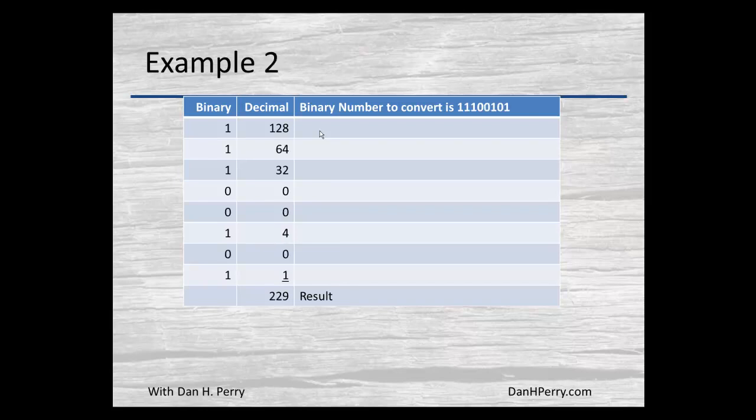Here in this one we do the same thing again. There was a one in the 128 position, a one in the 64, a one in the 32 position, and we continue down where there's a zero we write down a zero. In this case we get a result of 229.